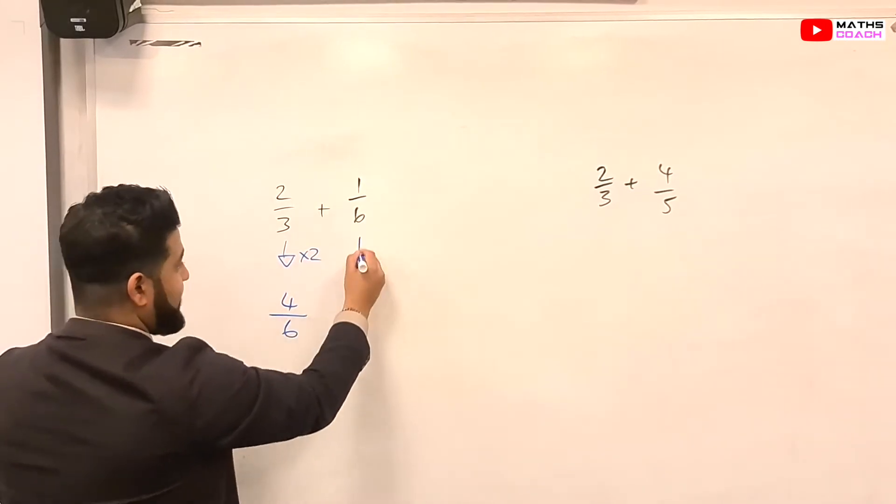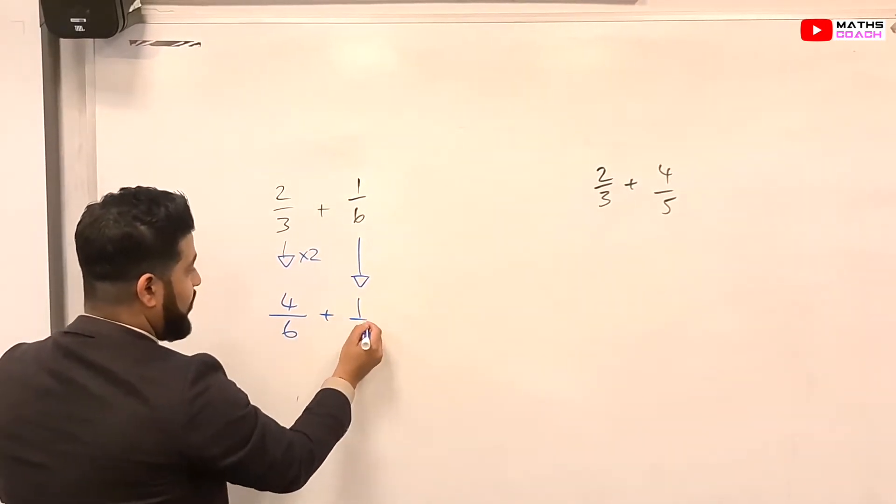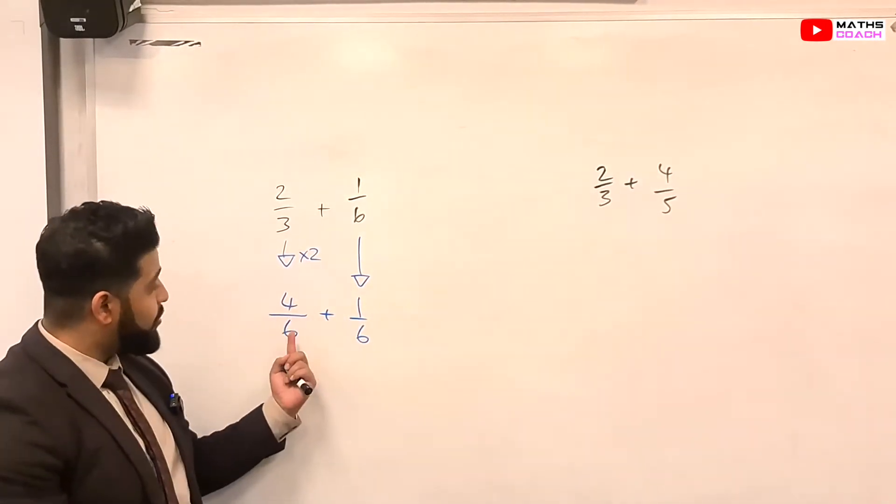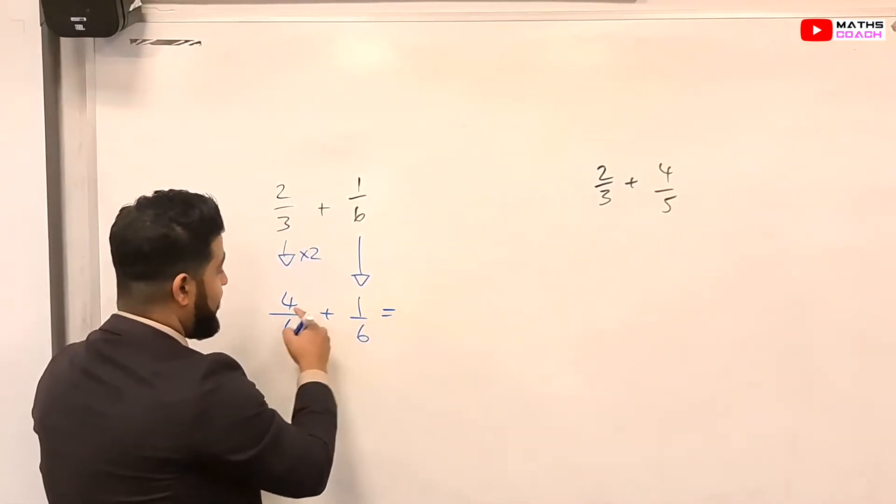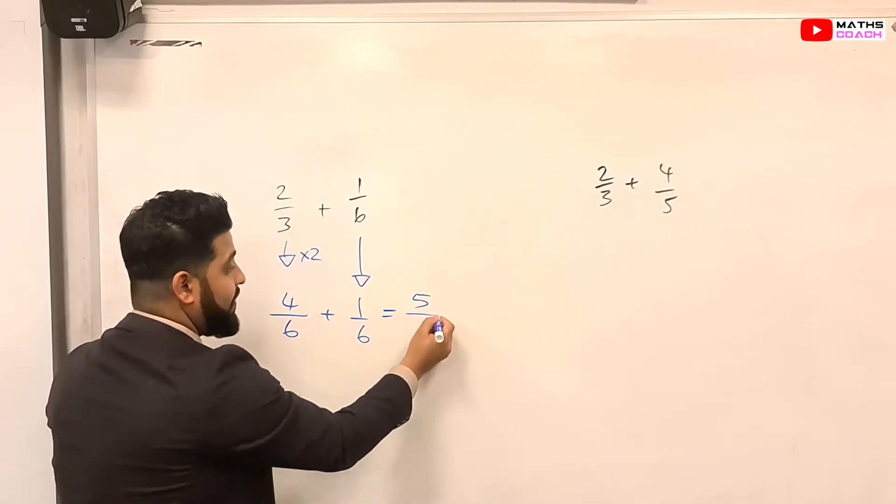OK, this one, you can leave it as it is. You can just drag it down, so you get 1 over 6. Now, you have the same denominator, and you can just add the numerators. So you get 4 plus 1, which is 5 over 6.